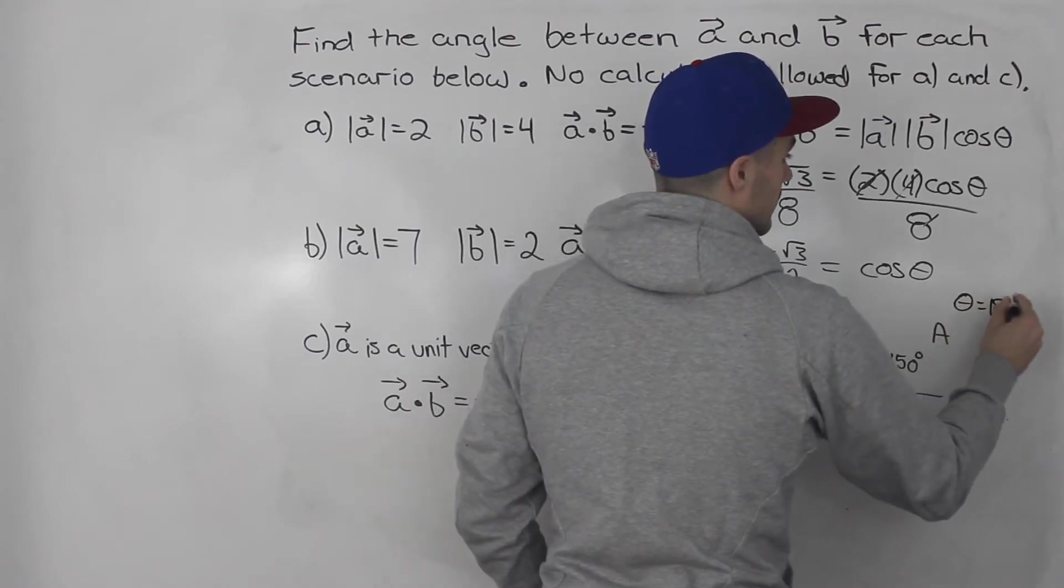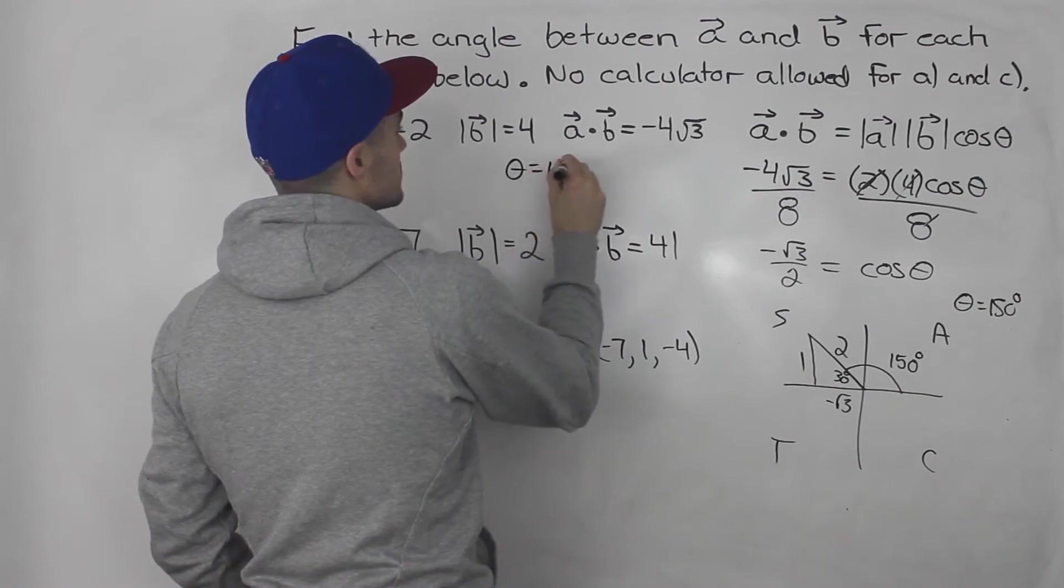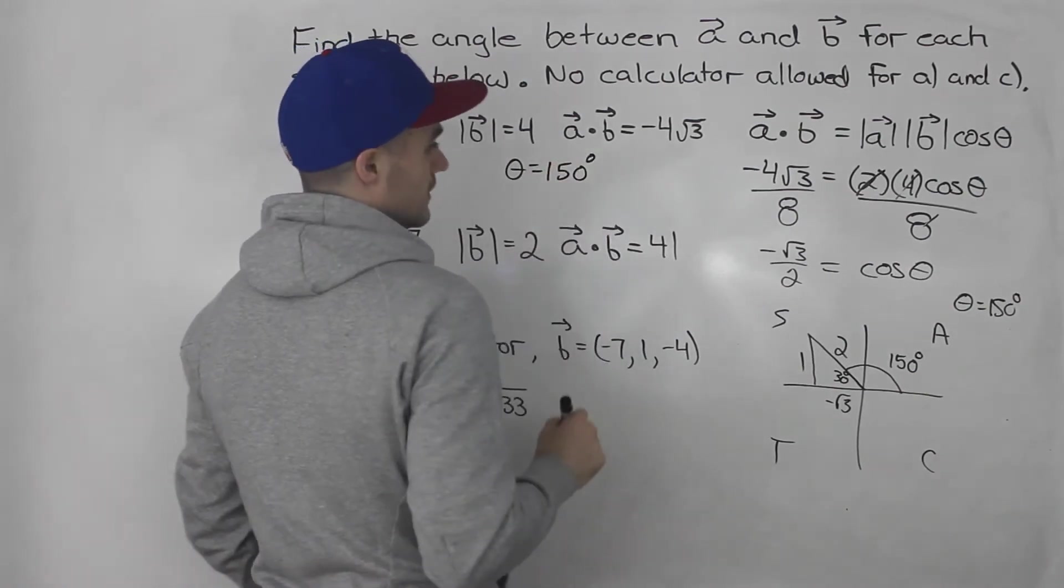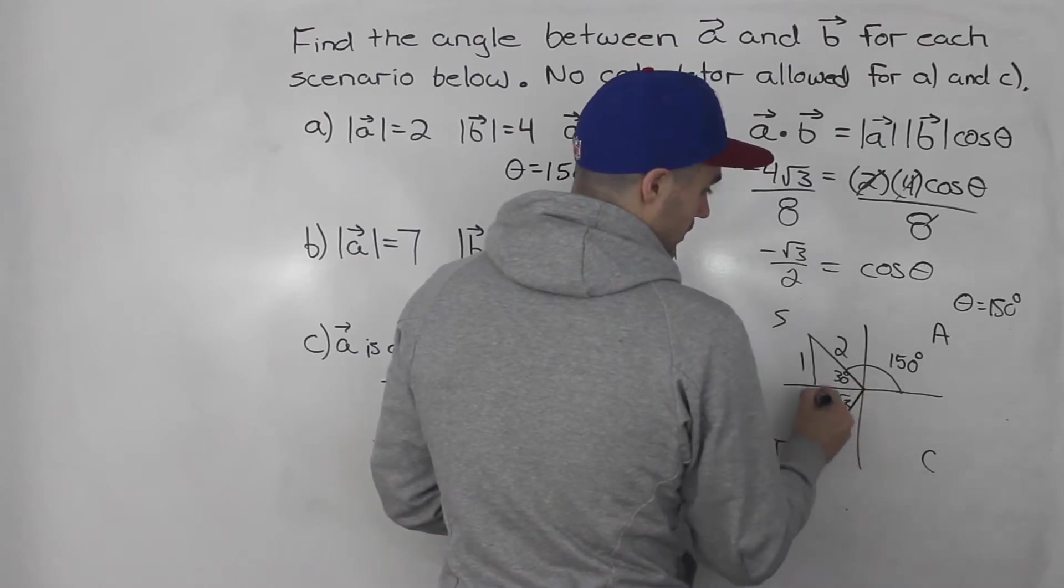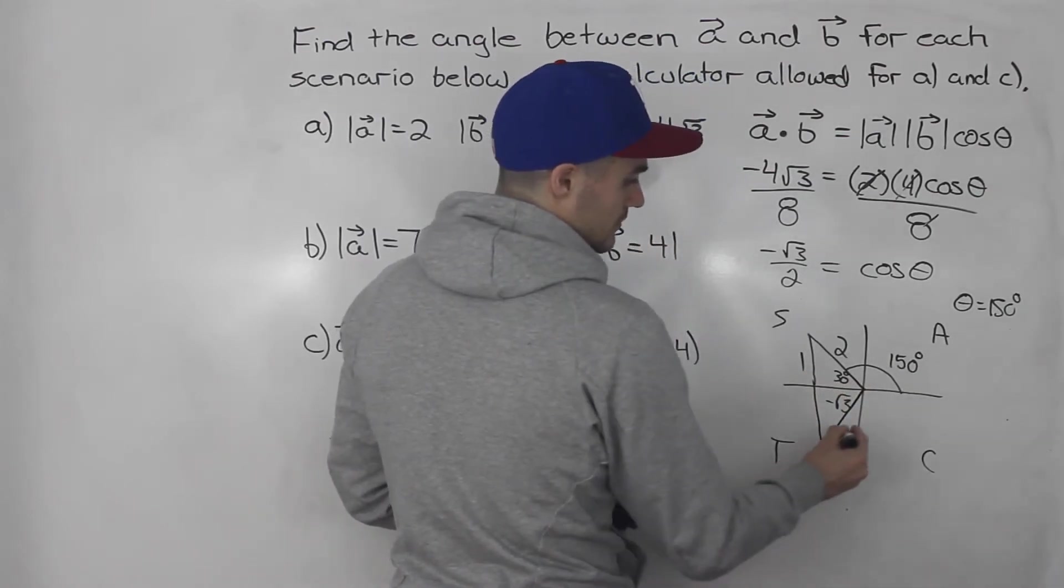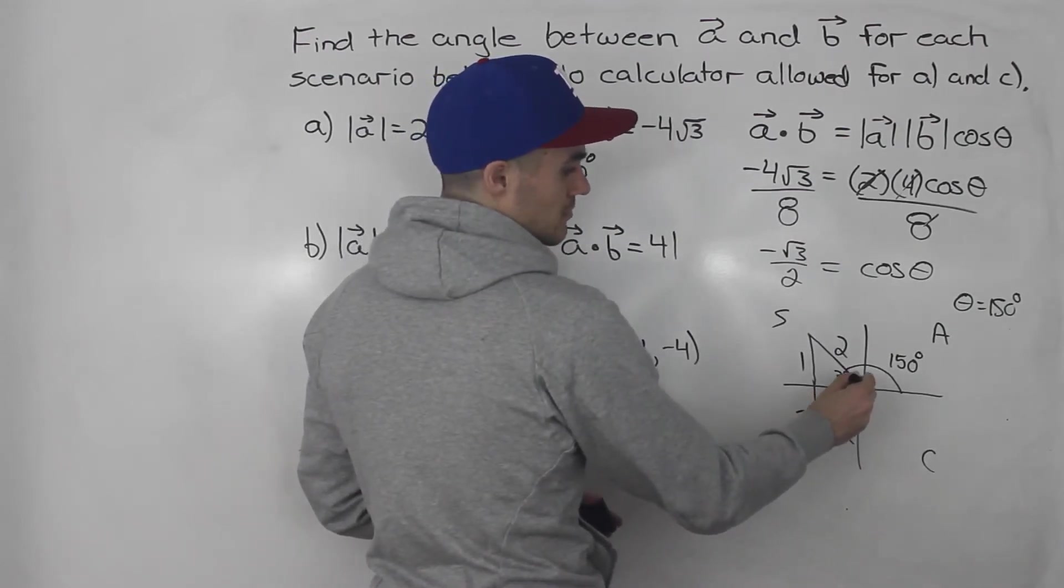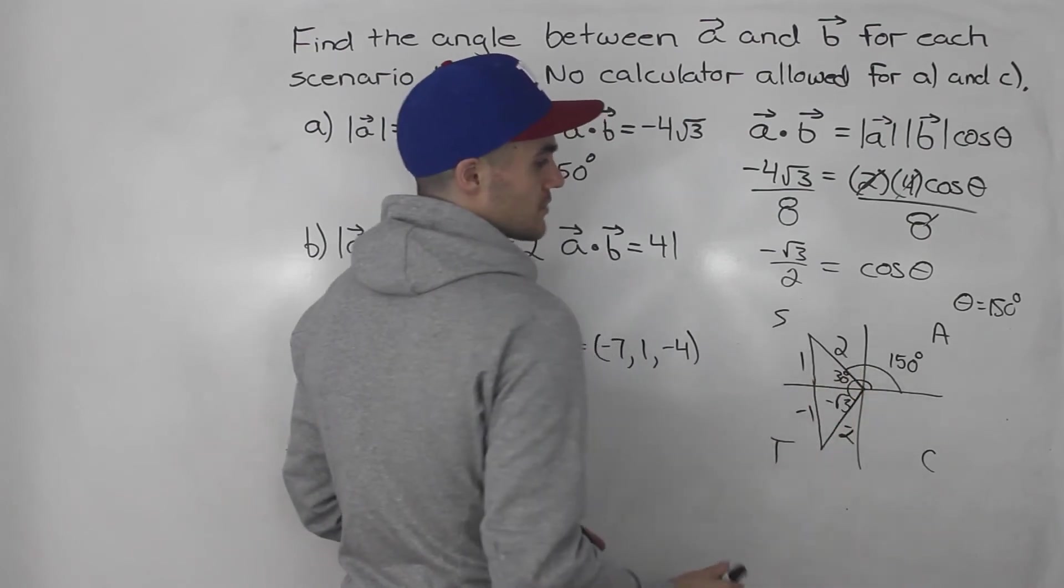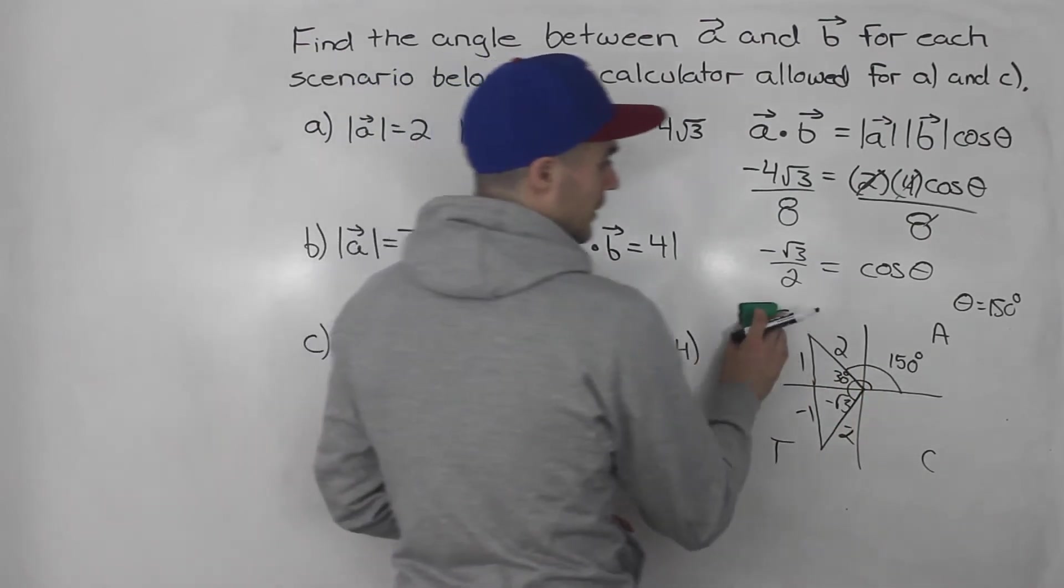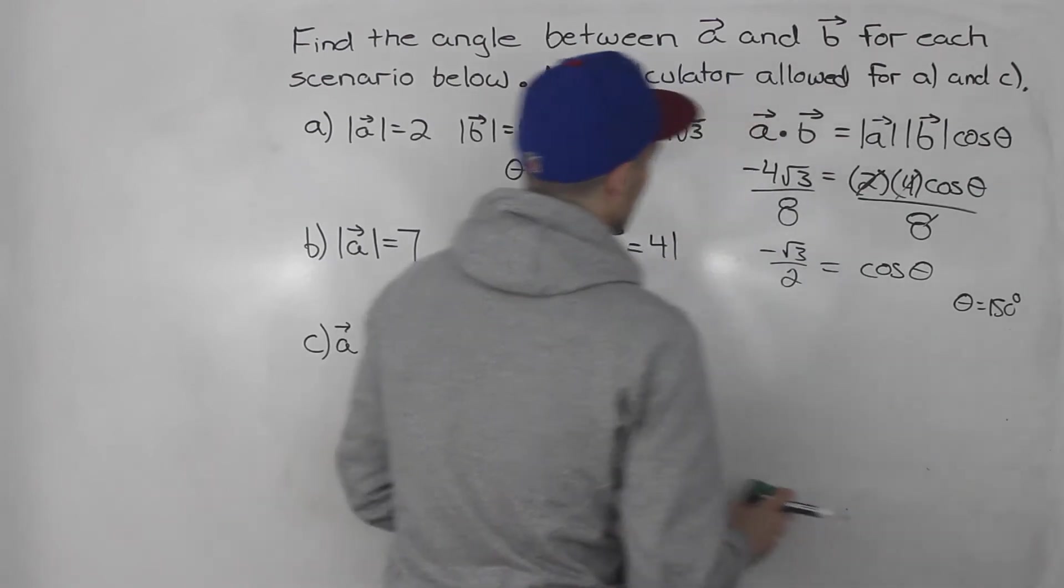That is going to be the angle between the two vectors. Now notice that we could have also drew a triangle here in the tan quadrant. This would be 2, this would be negative 1, and then the reference angle would still be 30. So the main angle would be 210, 180 plus 30. And if you think about it, that makes sense.